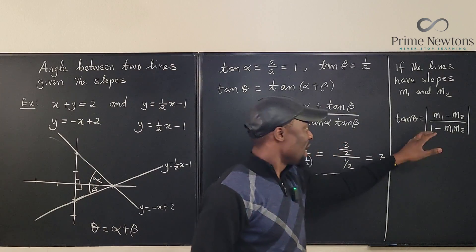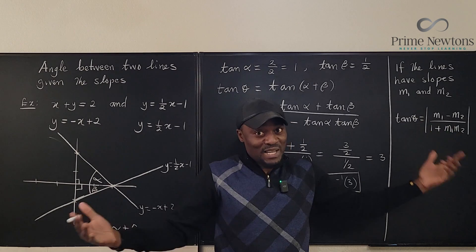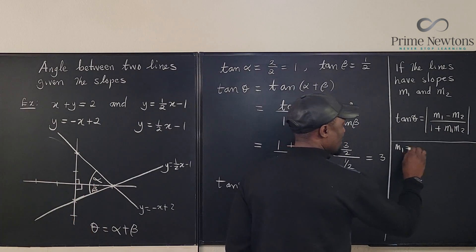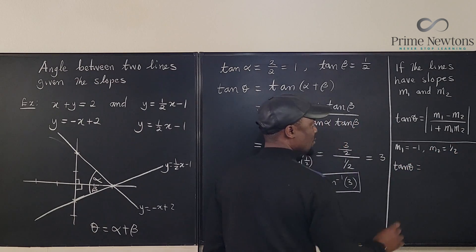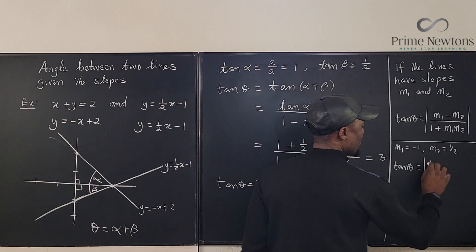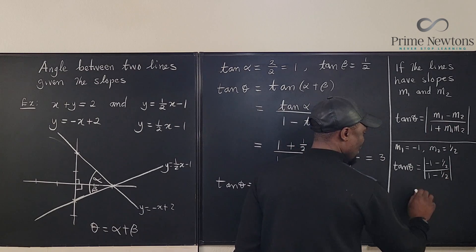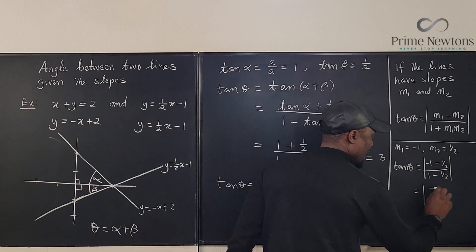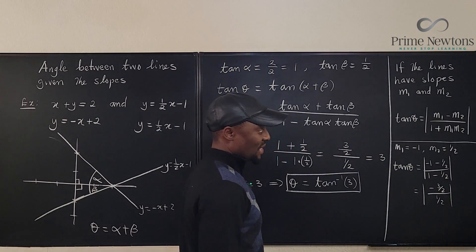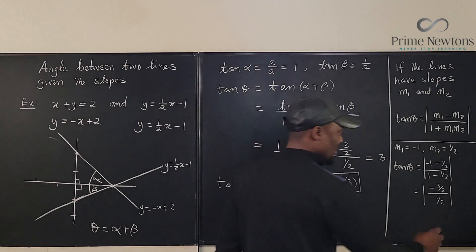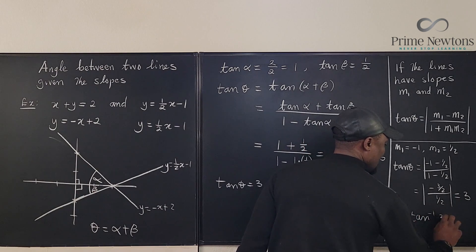Let's verify: m1 = −1, m2 = 1/2. Then tan(theta) = |(−1 − 1/2) / (1 − (−1)(1/2))| = |(−3/2) / (1/2)| = |−3| = 3. So theta = arctan(3), confirming our earlier answer.